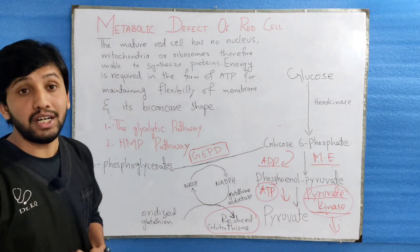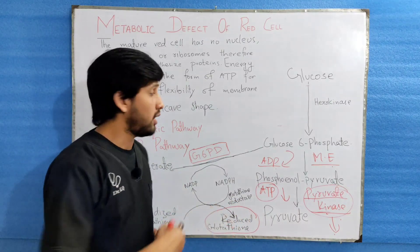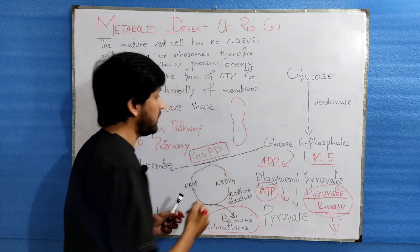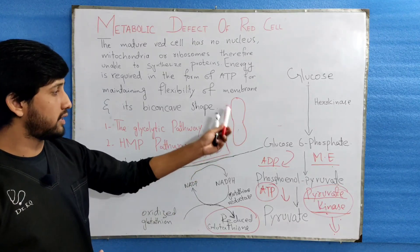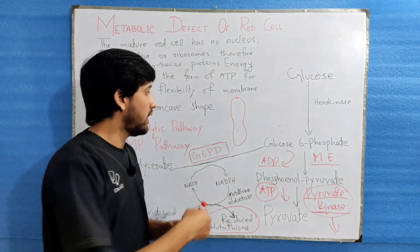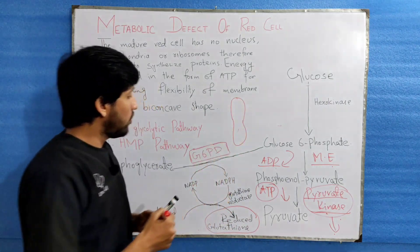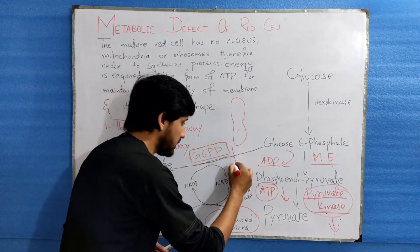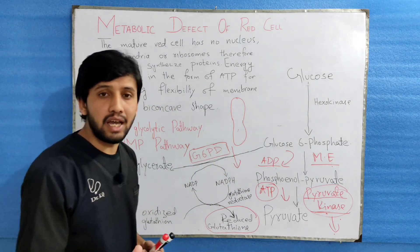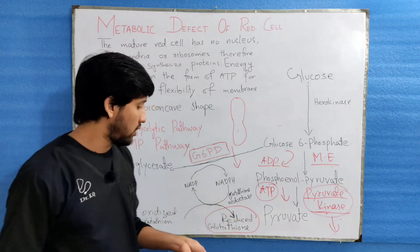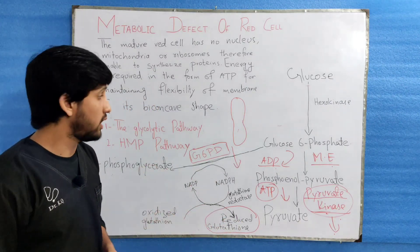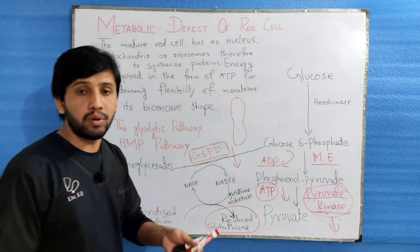NADPH is required for the conversion of oxidized glutathione into reduced glutathione. Reduced glutathione is very important because it normally protects the red cell membrane. The red cell membrane is continuously under stress, and reduced glutathione protects it. Once there is a deficiency of G6PD, there will be a decreased — inadequate — level of reduced glutathione production.